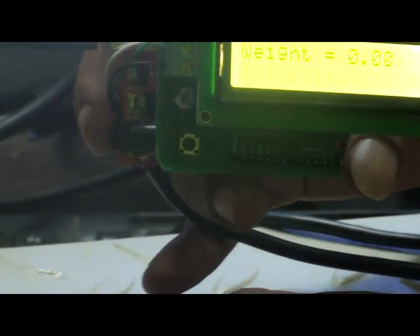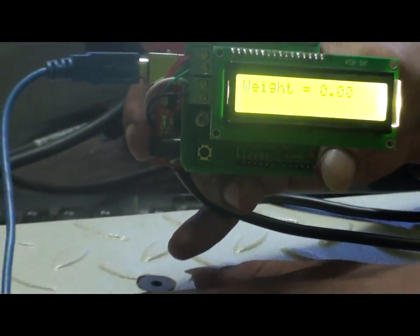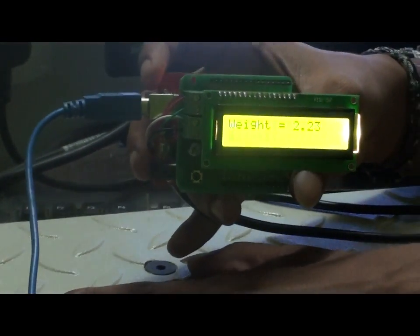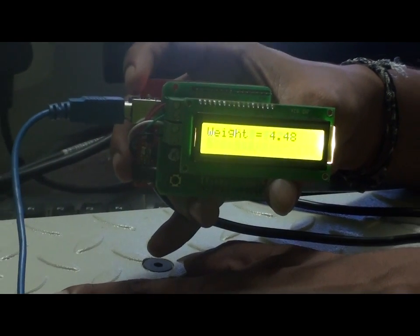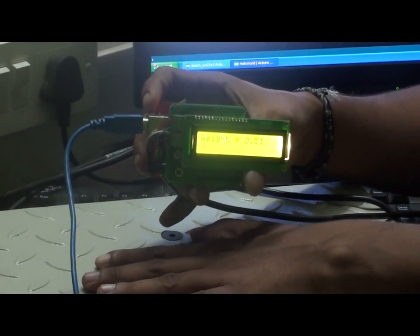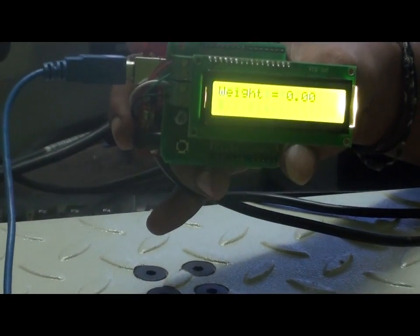If I apply some force, you can see the variations in the LCD. Now again it is set to zero.